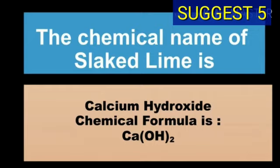The chemical name of slaked lime is calcium hydroxide and chemical formula is Ca(OH)2.